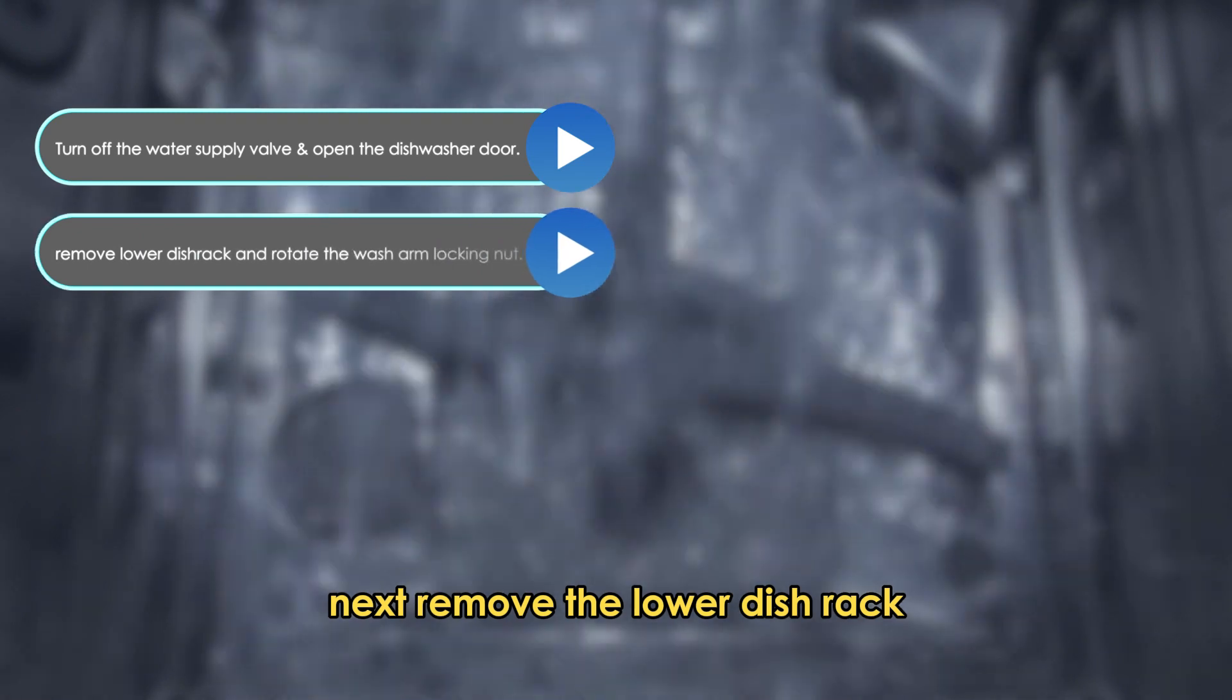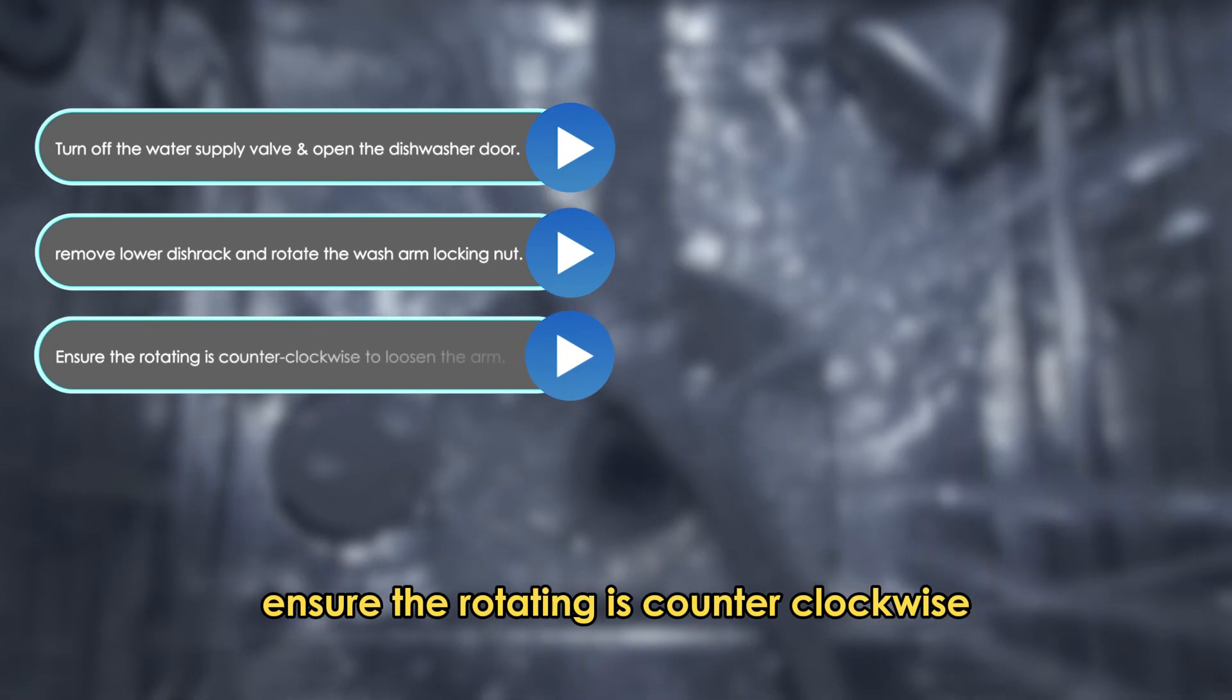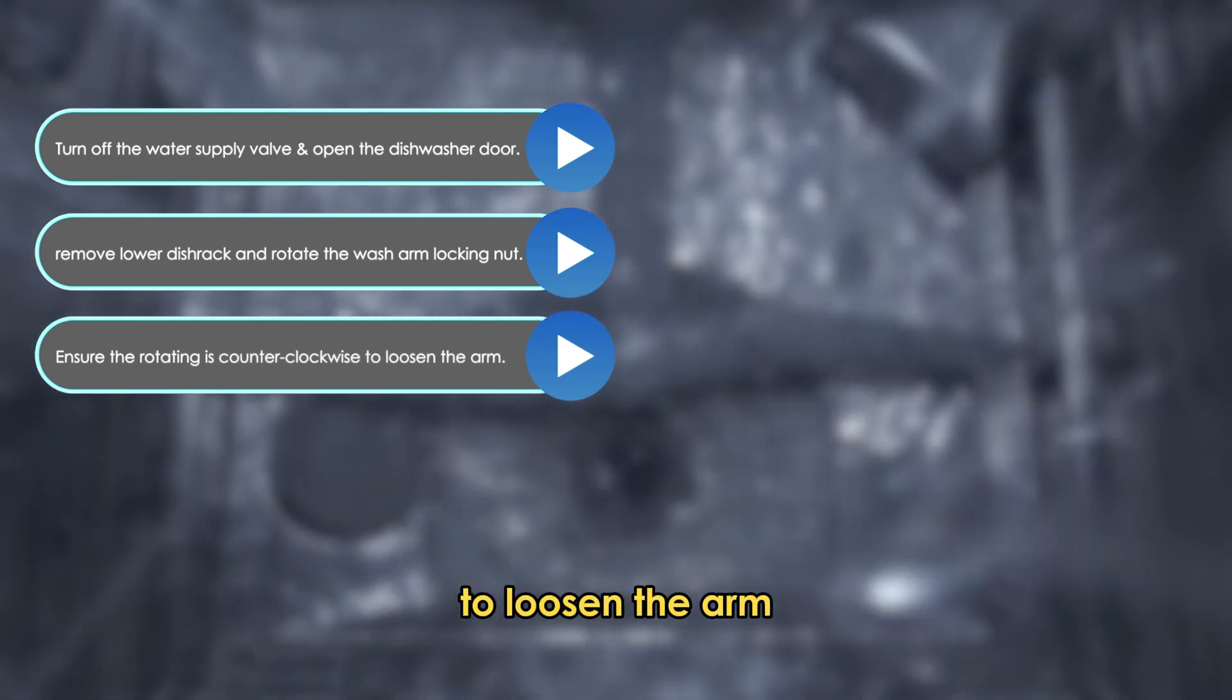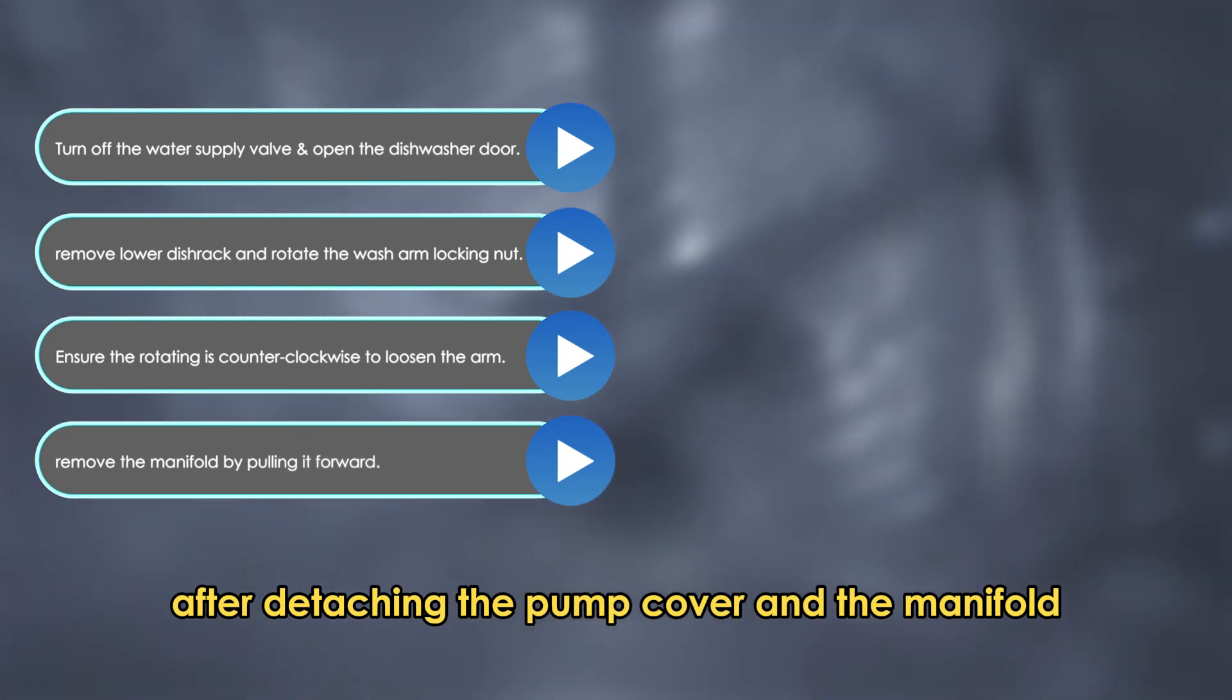Next, remove the lower dish rack and rotate the wash arm locking nut. Ensure the rotation is counter-clockwise to loosen the arm. After detaching the pump cover and the manifold inlet tube,